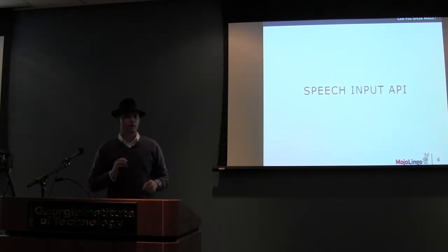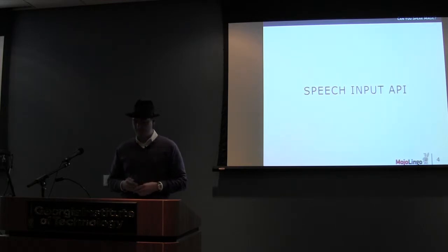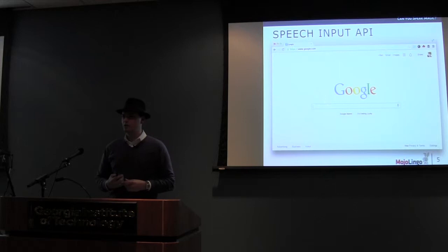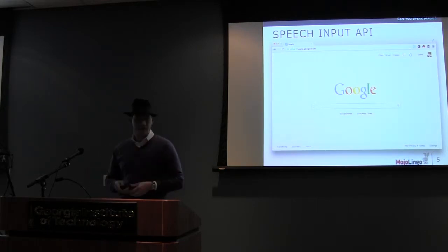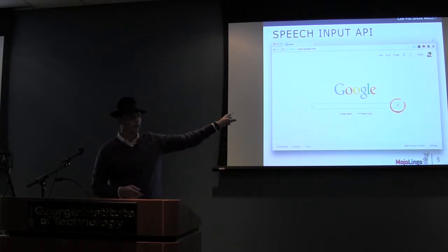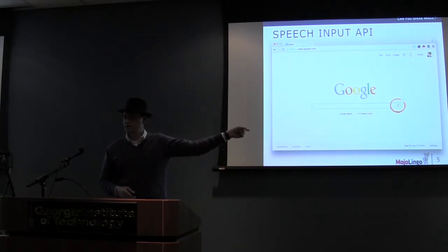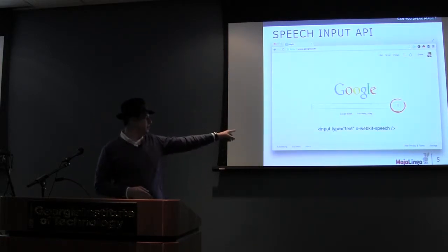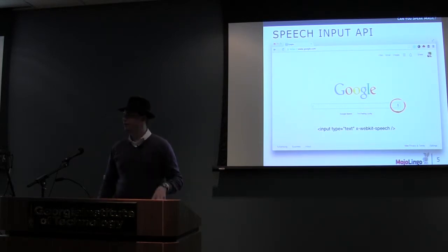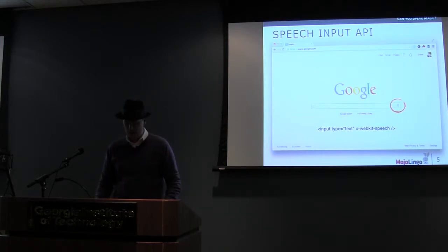So first, let's talk about the Speech Input API. Most of you have probably seen this page before — Google. This little microphone icon, you may have seen that. It's an input tag — I've made that bigger. It's an input tag for a text field that has an attribute of x-webkit-speech. And what that is, is a speech-enabled input form.